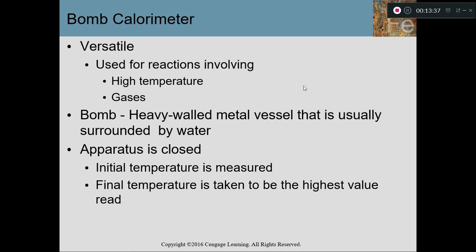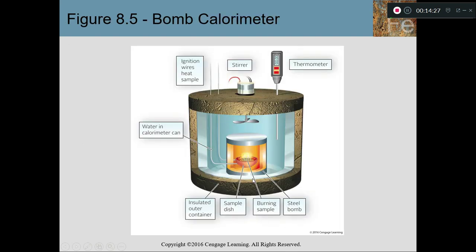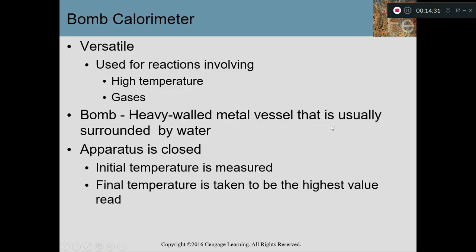In a bomb calorimeter, a couple of wires are run in so you can spark the sample and initiate the reaction. The reaction generates a lot of heat, but unlike the coffee cup calorimeter, the surroundings consist of two parts: the water and the calorimeter itself — the big metal can, stirrer, thermometer wire, all the metal inside also gets hot. So when figuring out where the heat went, it goes to two places: the water and the calorimeter. A bomb calorimeter can hold literally gallons of water, so it can absorb a great deal of energy — especially for very hot combustion reactions.